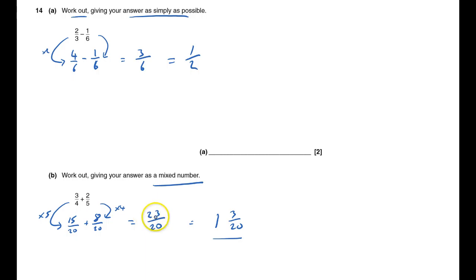And that is the same as one and three twentieths. That is a mixed number, and again, because they give me a little clue here, I'm pretty sure that I've got that one correct. That's question fourteen done.